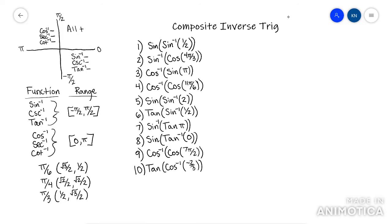Start on the inside. You're doing arc sine of one half — asking what angle gives a sine value of one half. The answer is pi over six. So that whole inside part is just pi over six. Now you're running the sine function of that. The sine of pi over six is one half. This one was kind of misleading because it was just the same answer we started with, but sometimes that happens.